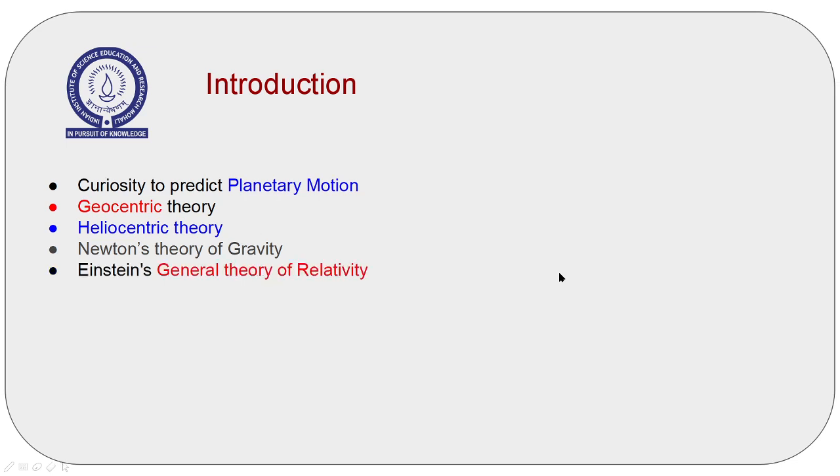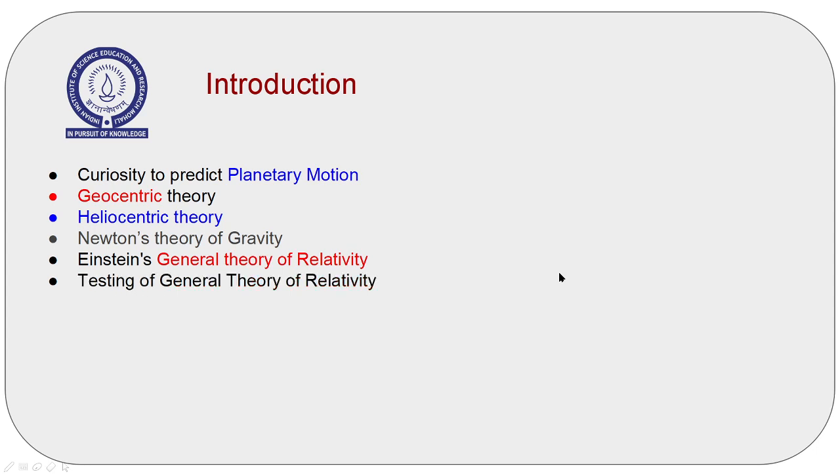Then Albert Einstein came along. In 1915, he published the general theory of relativity that perfectly explained the mysterious perihelion precession of Mercury and other gravity-related problems. We will review the prediction made by general theory of relativity compared to the classical theory.